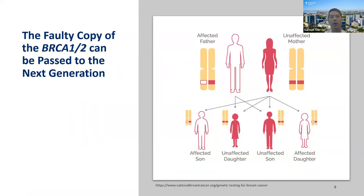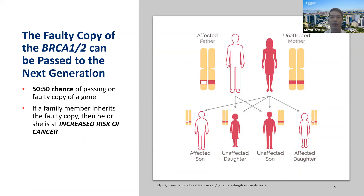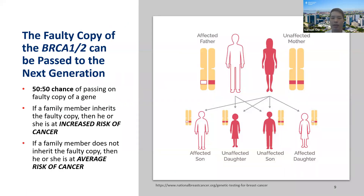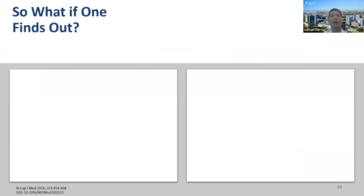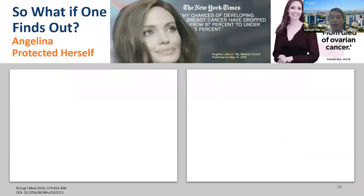This faulty copy of BRCA1 can be passed on to the next generation in a 50-50 way. If a family member inherits the faulty copy, he or she is at increased risk of cancer. But if they do not inherit it from the parent, they are at average risk. You can see in this pedigree — an affected father and unaffected mother with four children — not all children will be affected. In Angelina Jolie's case, she was the affected daughter. One may ask: this is something inborn, so what can you do if you find out?